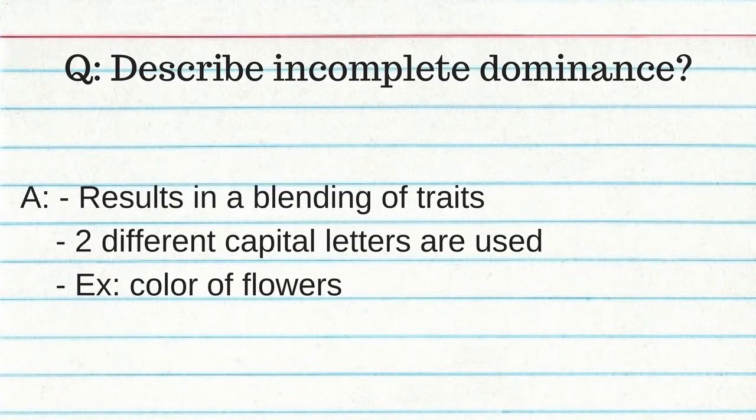Incomplete dominance results in the blending of traits — two different capital letters are used, and an example is the color of flowers. For characteristics with more than two possible alleles, one person still only has two alleles — one from the mother and one from the father. So even with blood type, where there are many possible alleles, you only have two.